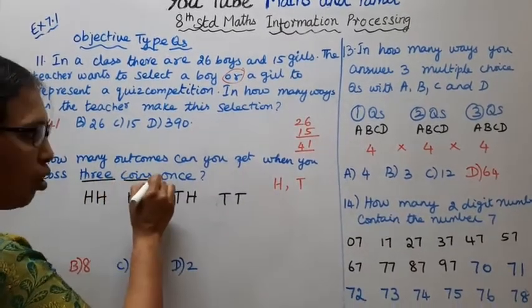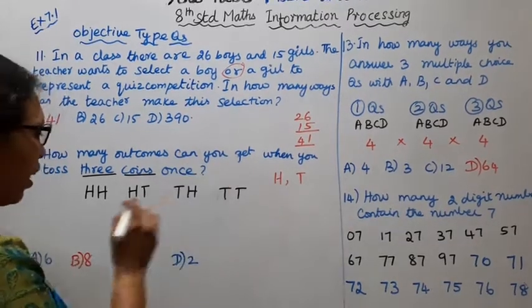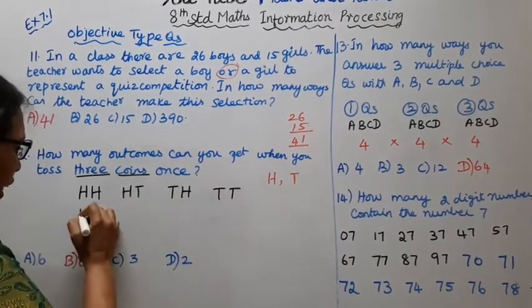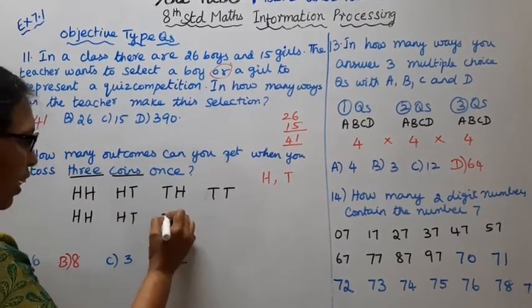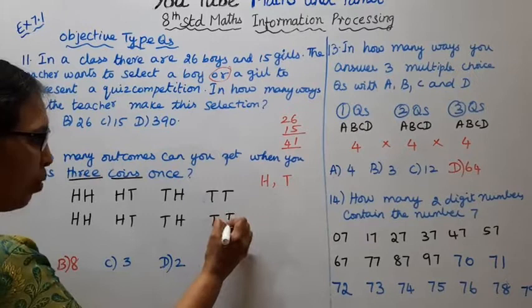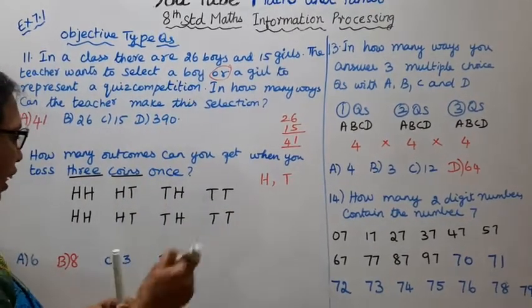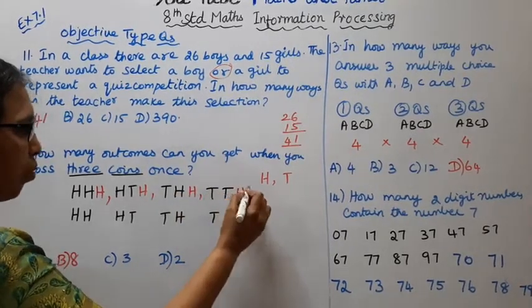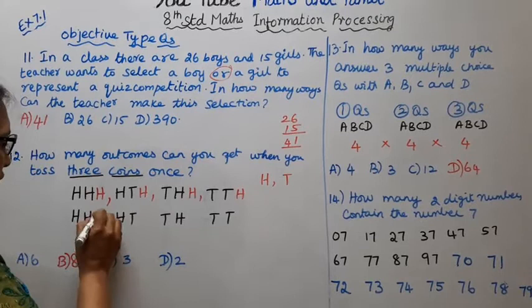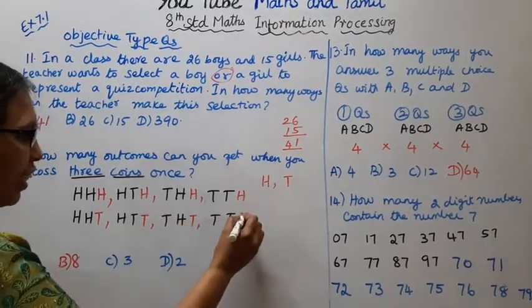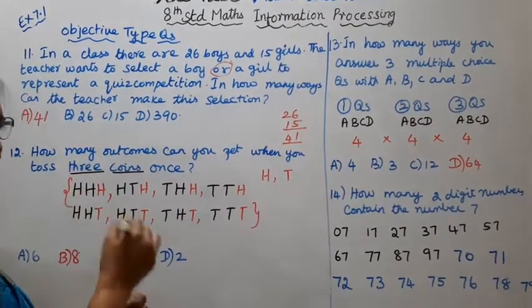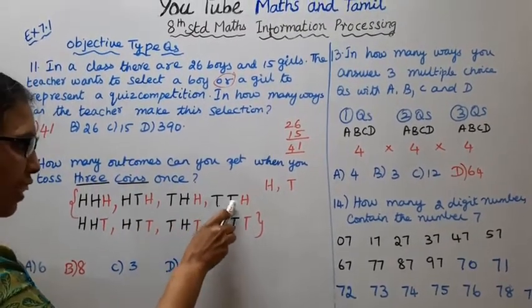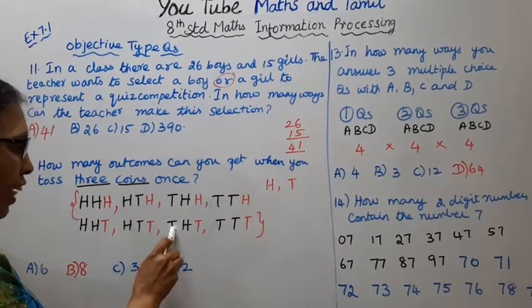For three coins, the possible outcomes are: Head-Head-Head, Head-Head-Tail, Head-Tail-Head, Head-Tail-Tail, Tail-Head-Head, Tail-Head-Tail, Tail-Tail-Head, Tail-Tail-Tail. These are all the possible outcomes when tossing three coins.